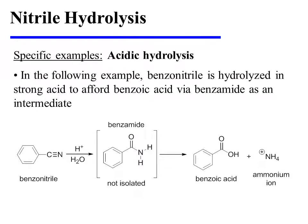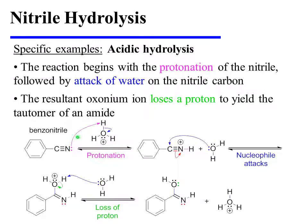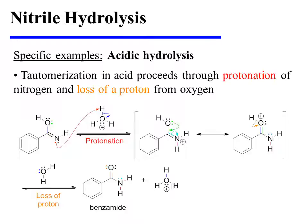Now let's turn our attention to some specific examples. Benzonitrile is hydrolyzed in strong acid to afford benzoic acid via benzamide as an intermediate. The reaction begins with protonation of the nitrile, followed by the attack of water on the nitrile carbon, which displaces a pi-bonding pair of electrons onto nitrogen. The resultant oxonium ion loses a proton to afford the tautomer of an amide. Tautomerization in acid proceeds through protonation of nitrogen, generating a resonance-stabilized cation, which loses a proton from oxygen to produce benzamide.